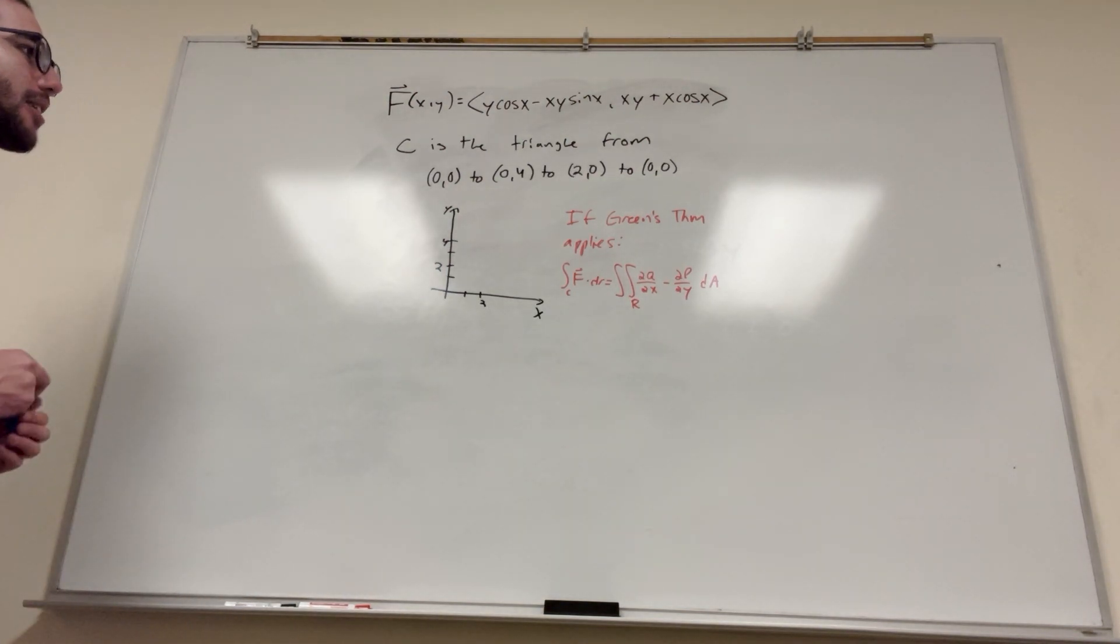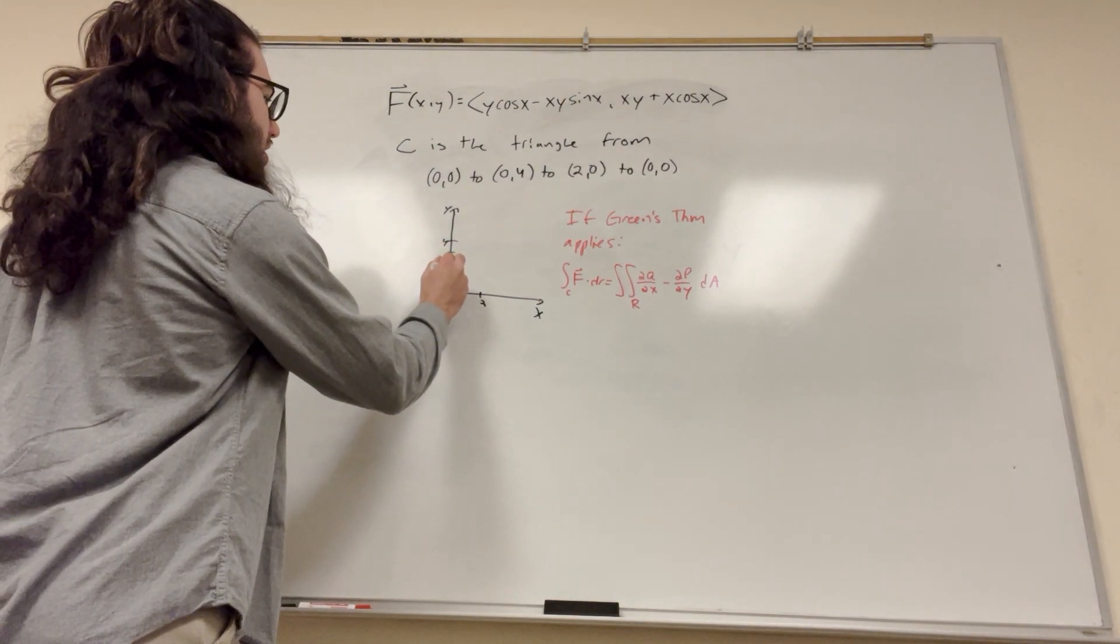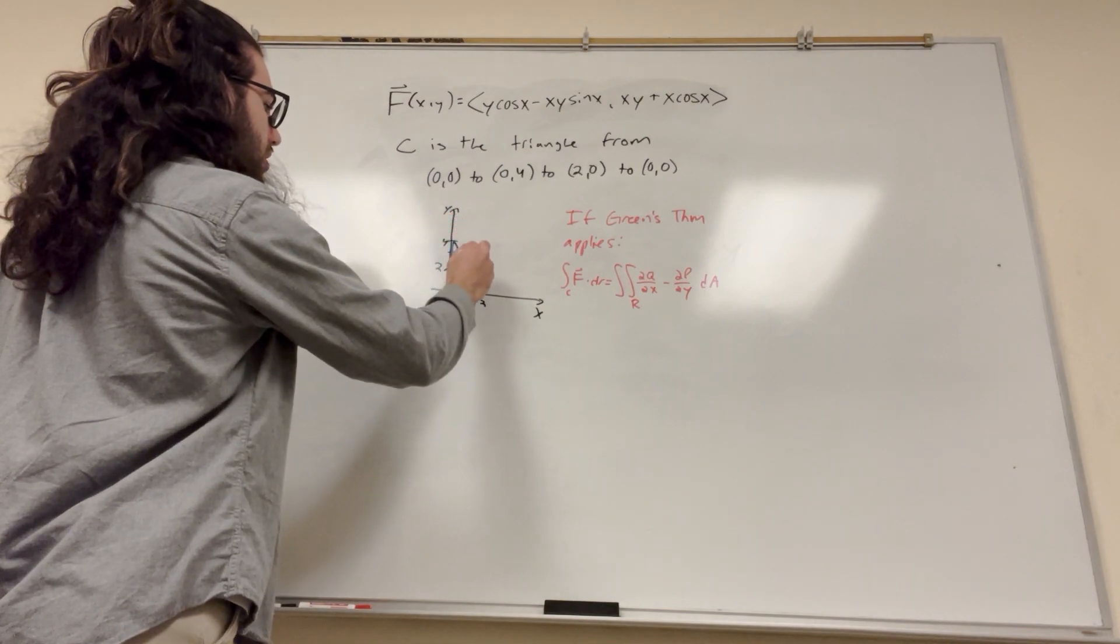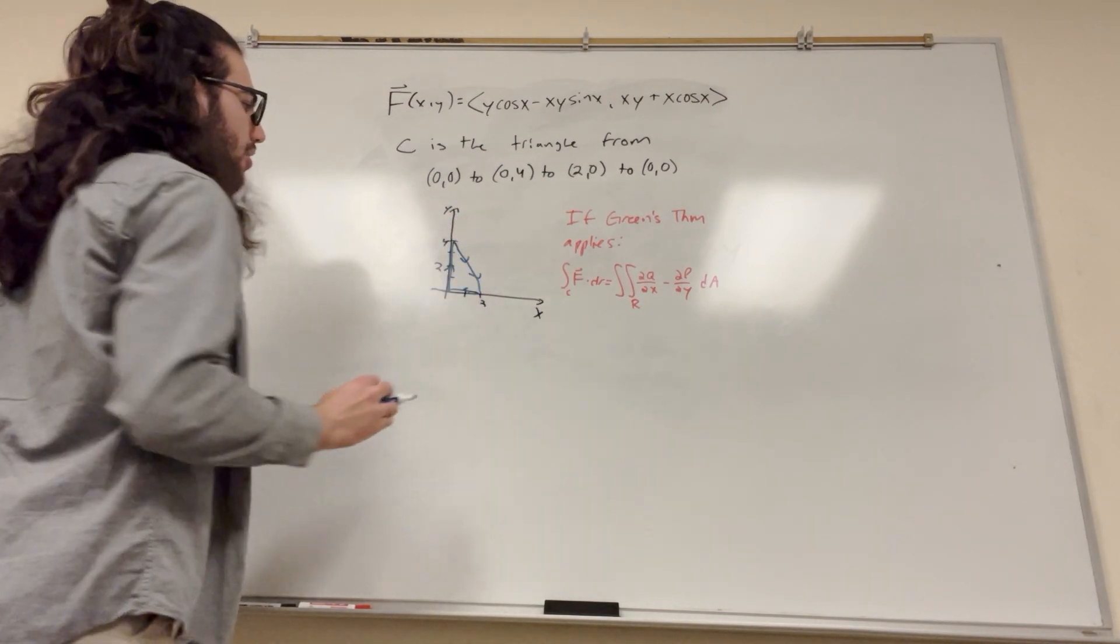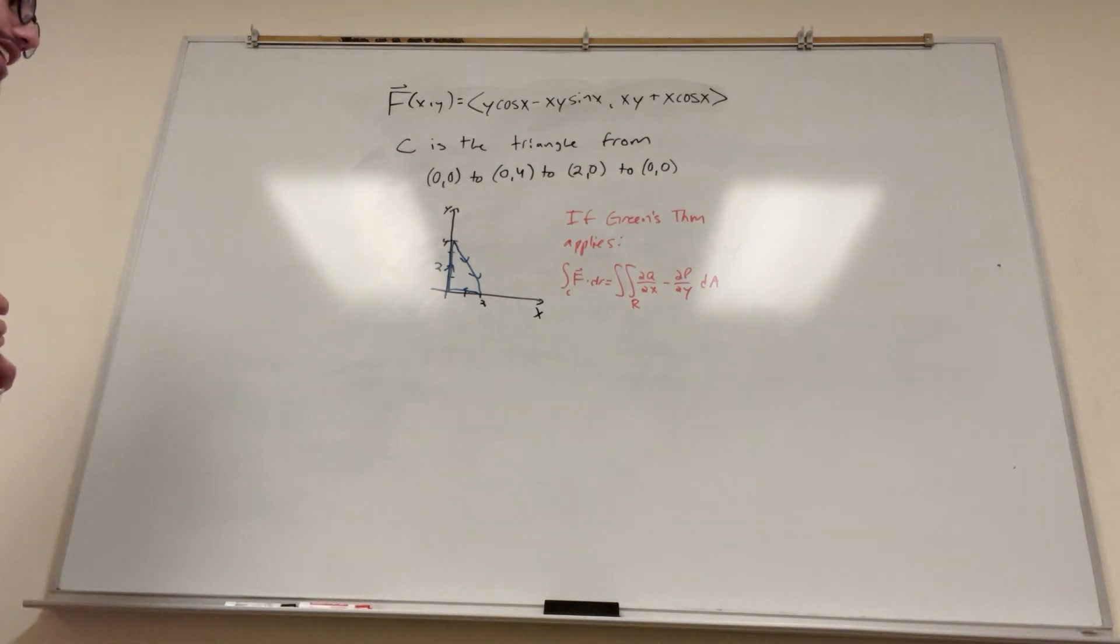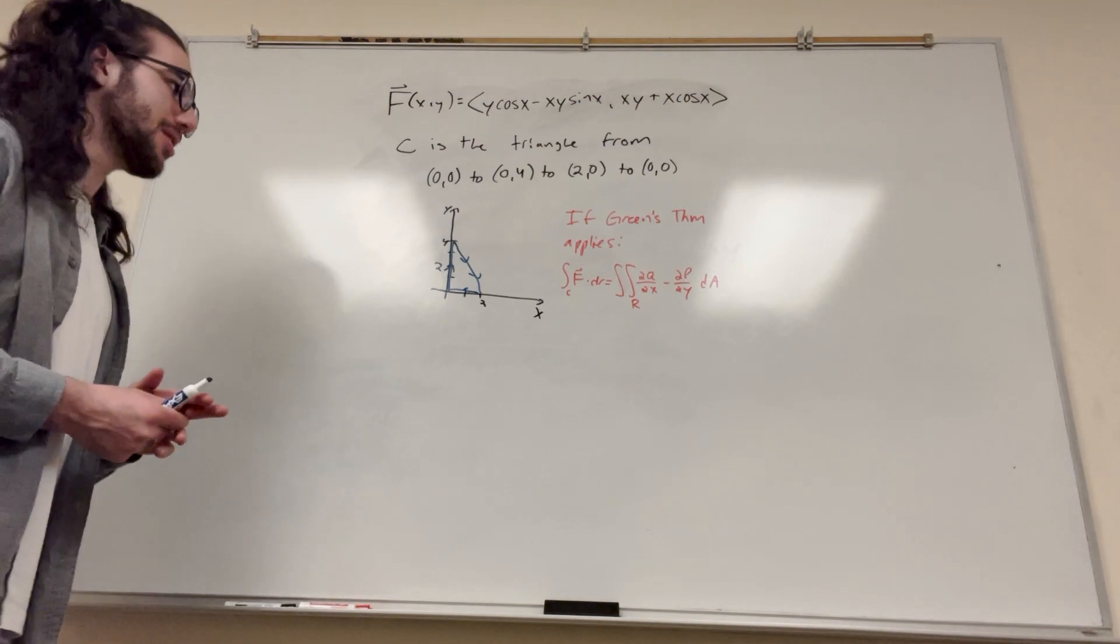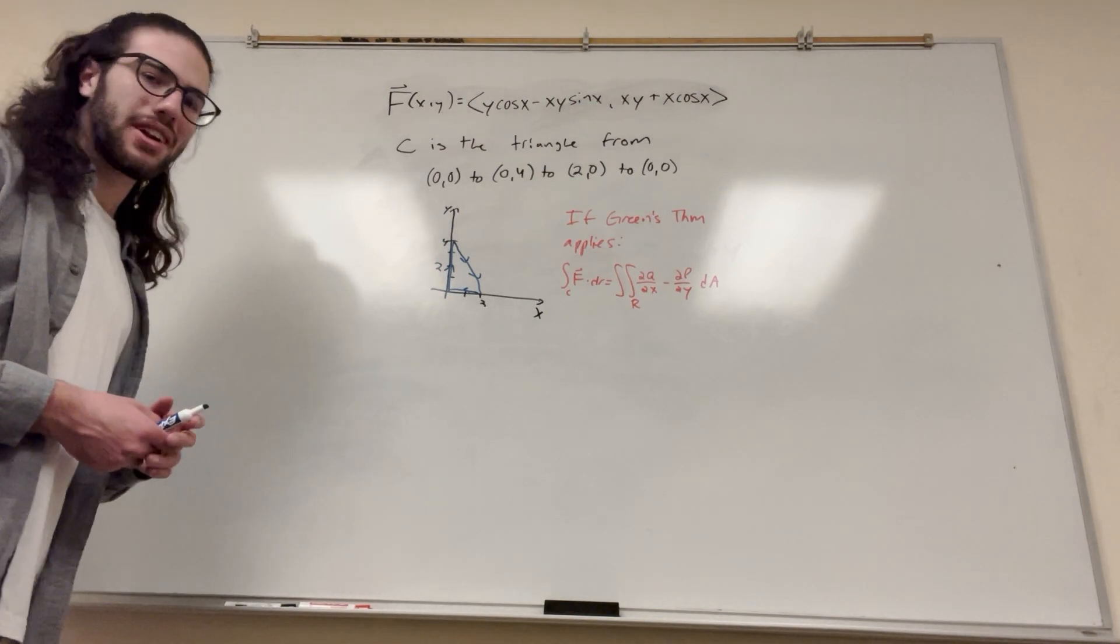We've got the triangle from (0,0). Let's draw this. Here's the starting point (0,0), goes up to (0,4). Draw your line to (2,0) going that way, and then back to (0,0). So if you were solving this normally, you'd have to set up three line integrals because you have three different lines and they're not piecewise smooth. I don't want to do it that way.